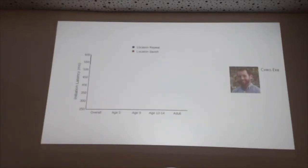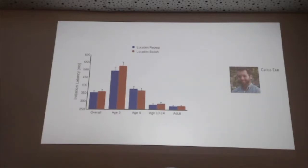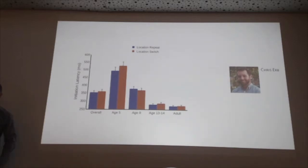We broke down the data as a function of whether the target location had repeated or switched from the previous trial. Overall there's not really much of a difference, but broken down by age, for five-year-olds there is a significant effect: they start their movement quite a bit faster when the target location repeats. The curvature effects aren't really there — what's happening with location repetition is it's influencing something earlier, initiation latency, rather than the movement path.